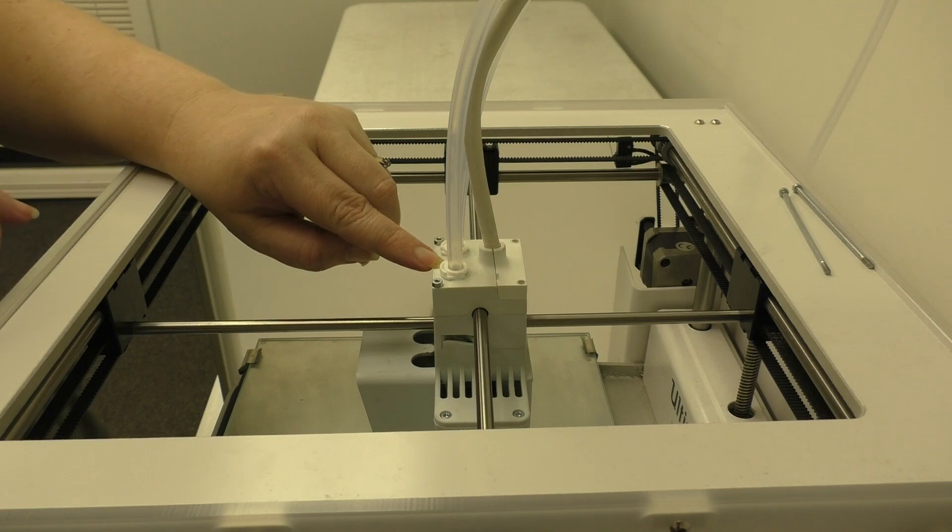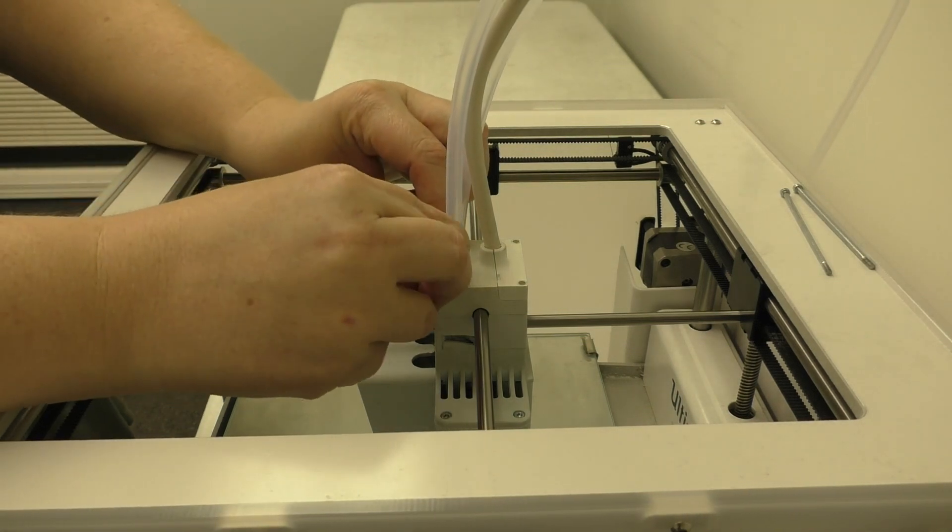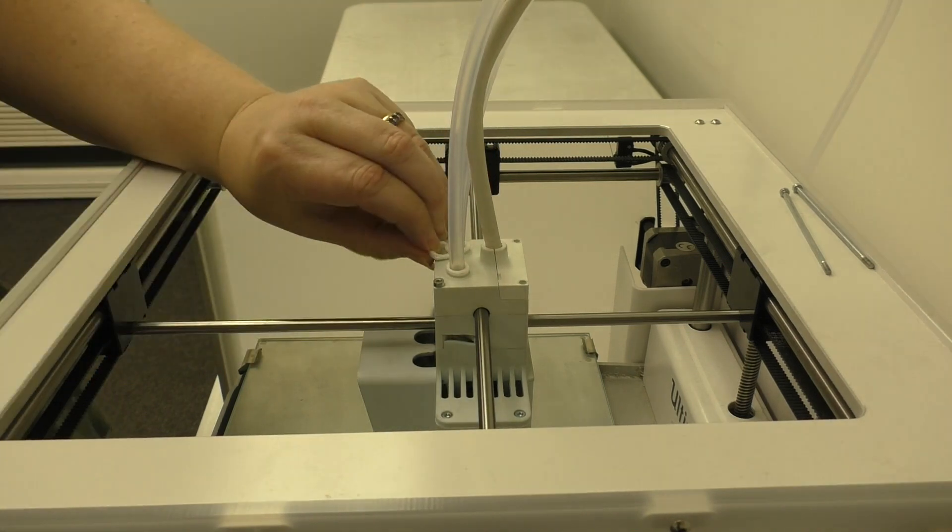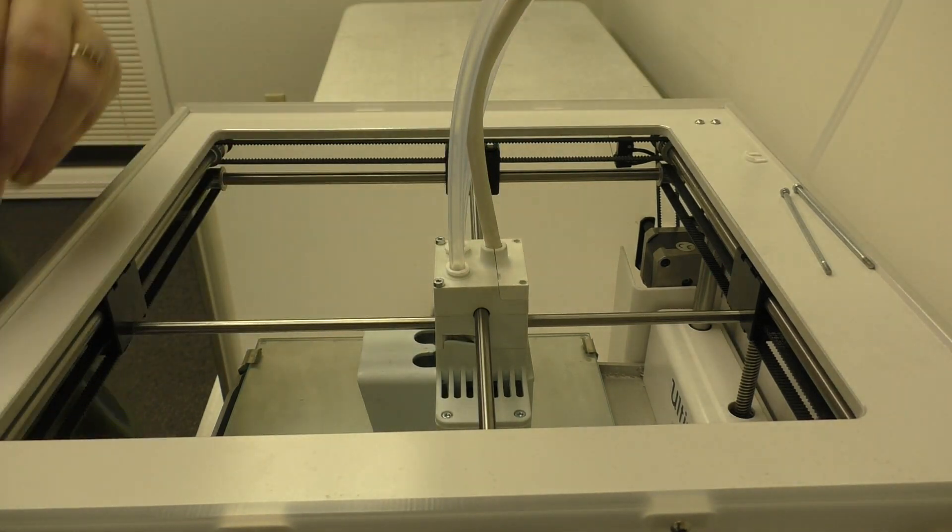Next, we're going to remove the clamp clips from underneath the collets. Just slide them forward. Be careful not to drop them.